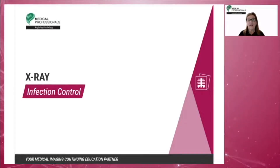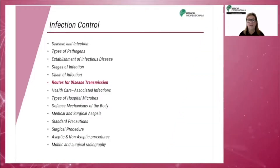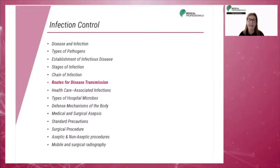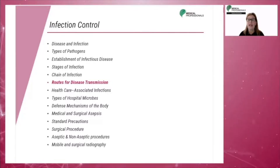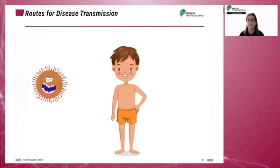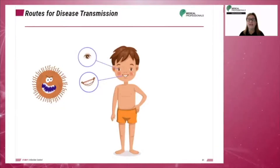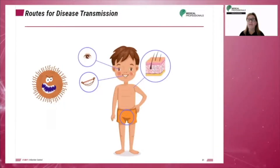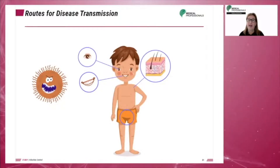Up next, the different modes of transmission. There are two main methods of disease transmission: direct contact and indirect contact. However, there are four specific categories of indirect contact. These are droplet, airborne, vehicle, and vector. As previously explained, the transmissibility of the infectious disease process varies depending on the type of pathogen.